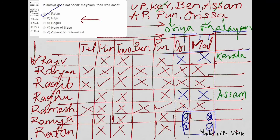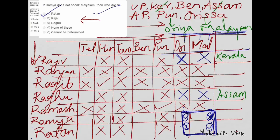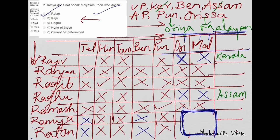An important note: this question-specific data — that Ramya is crossed for Malayalam — is only valid for this question. Do not carry it as definitive data into the next question. However, you can legitimately keep the broader elimination you derived from the table. When the question moves on, leave those question-specific assumptions blank again. The diagram helps you eliminate more, and question hints can also save you and keep you on the right track.